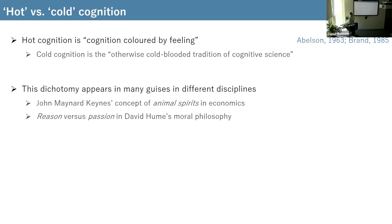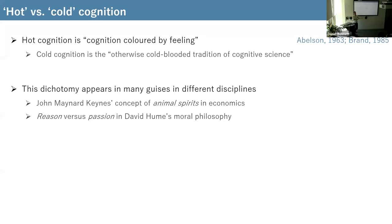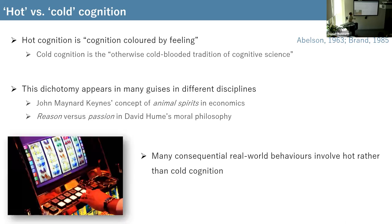So 'cold-blooded' here is a kind of diss, though I think it can also be a badge of honor. The idea of pure, mathematical information-processing architecture versus hot cognition colored by feeling crops up in many places beyond social psychology. In economics, Keynes had the idea of animal spirits — strange behaviors that can't be explained by expected utility theory. In David Hume's moral philosophy, you have reason versus passion. Whether or not we accept this distinction, it's fair to say that many consequential real-world behaviors would fall under the heading of hot rather than cold cognition.